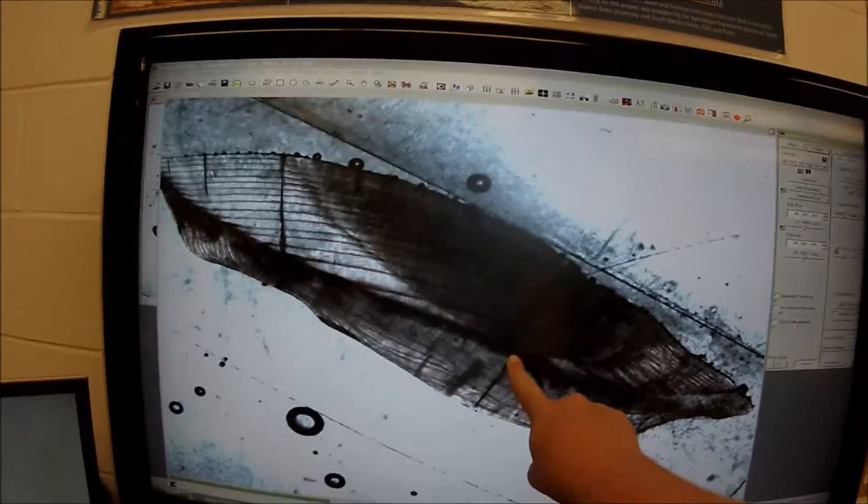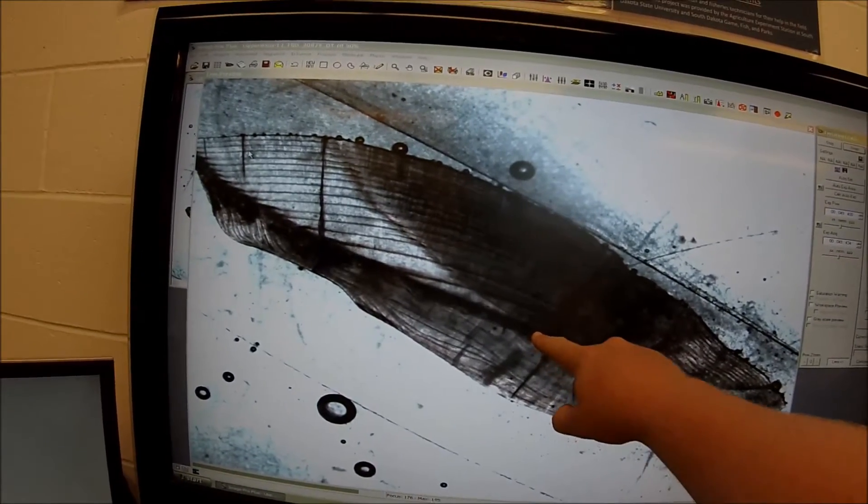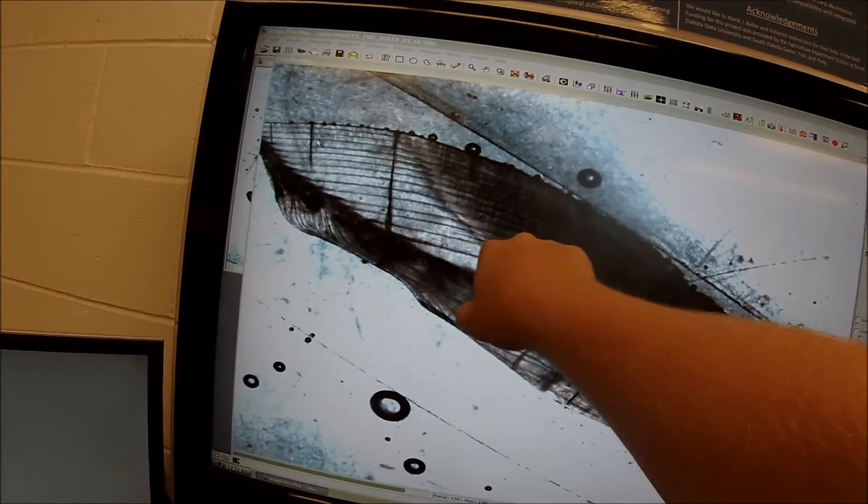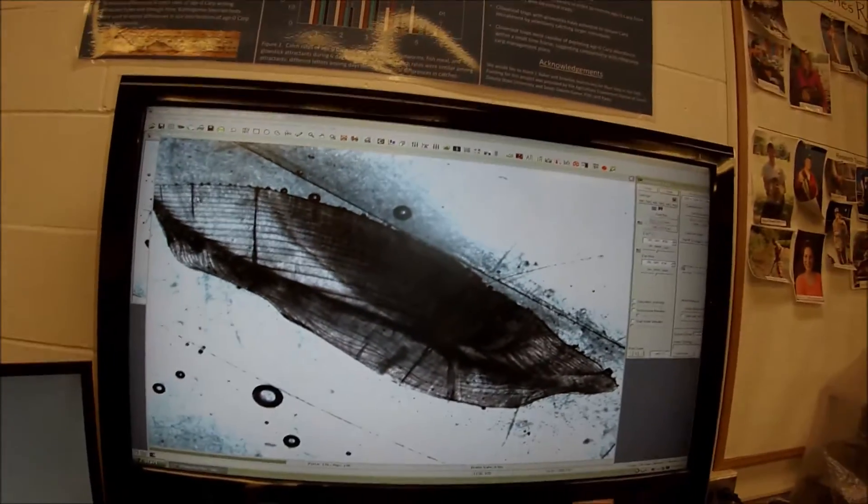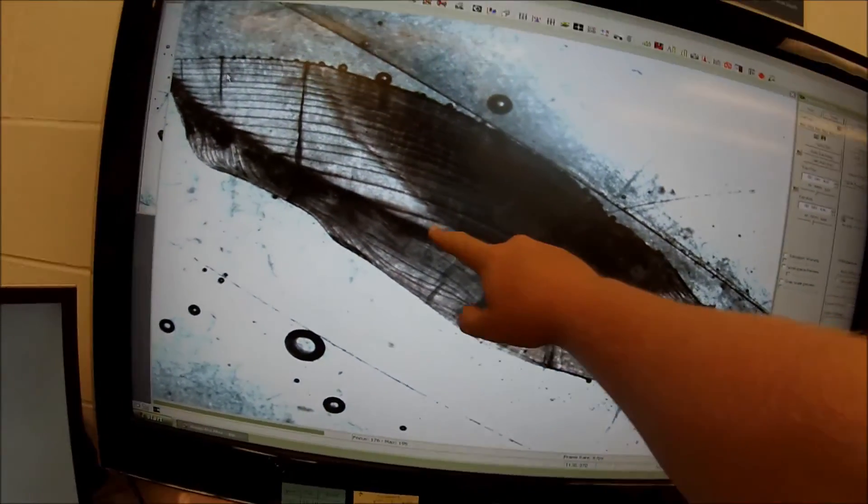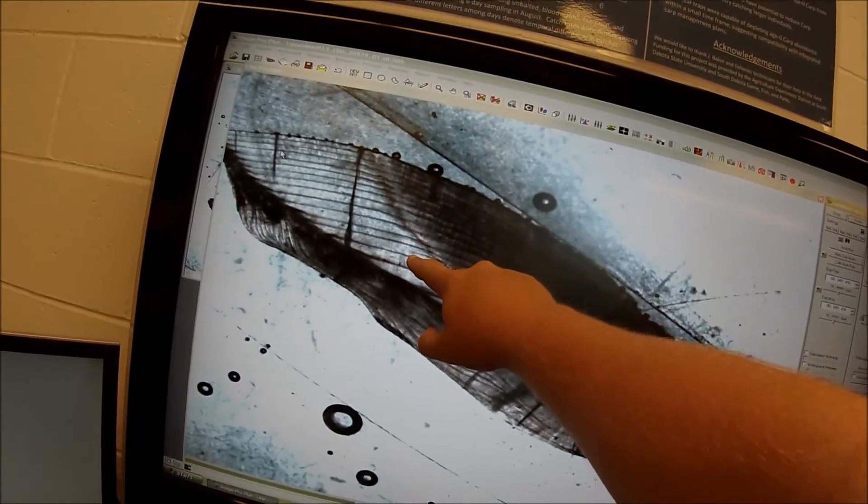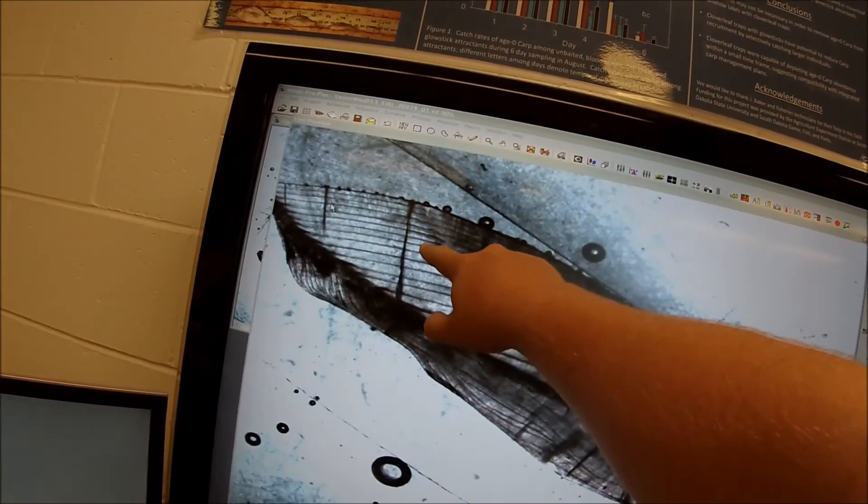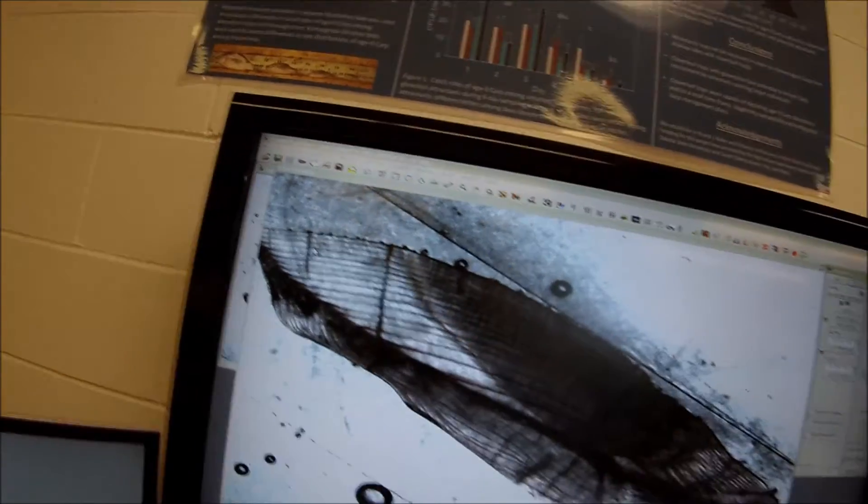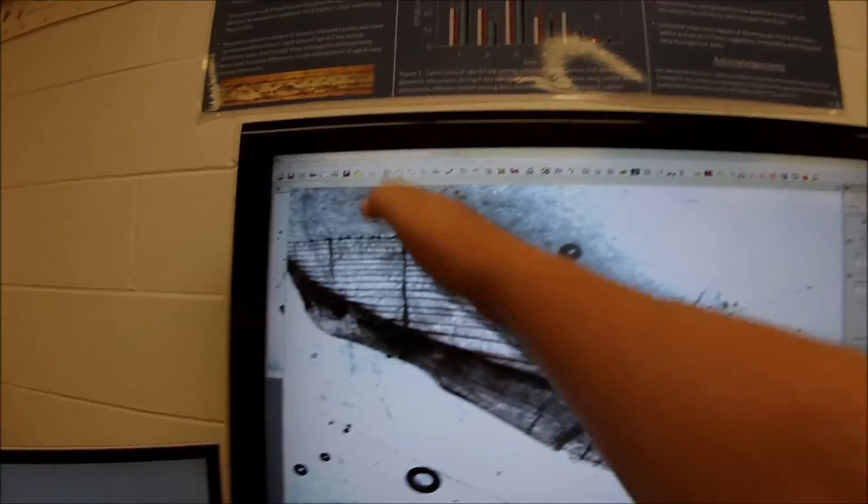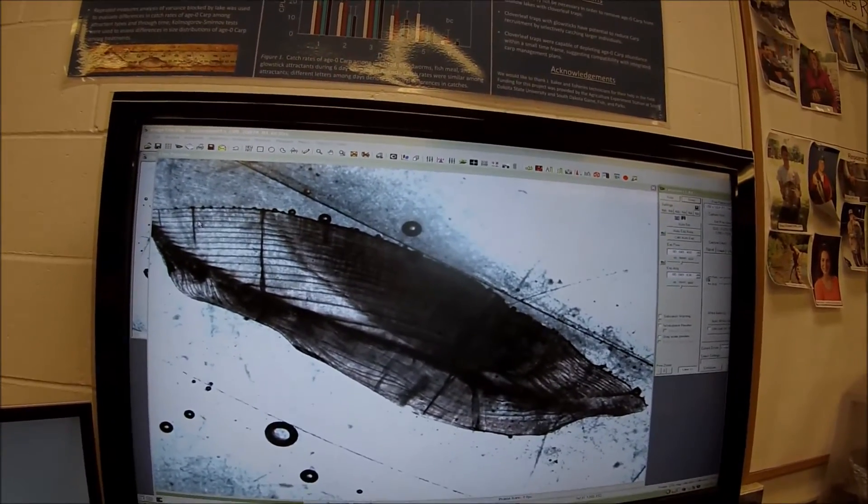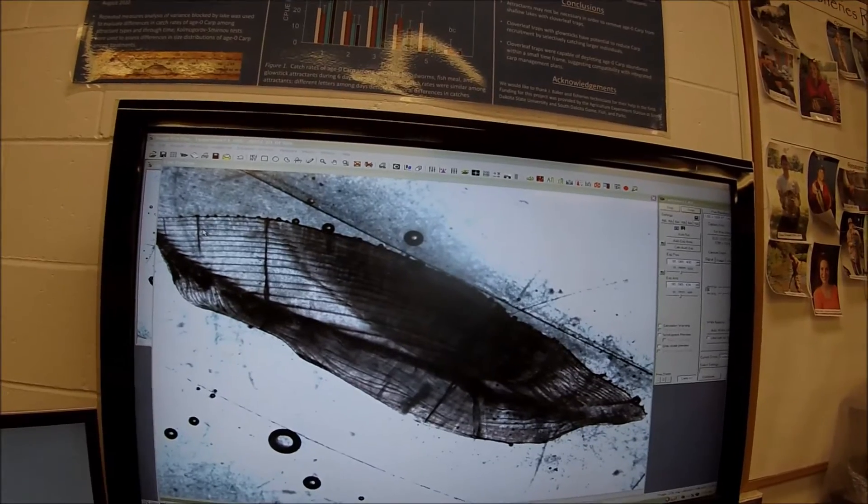This is the nucleus. This is what you call the center of the otolith. And then from here, you count the dark bands. Those are annuli, growth rings, just like a tree. So we have the nucleus. Then we've got 1, 2, 3, 4, 5, 6, 7, 8, 9, 10, 11, 12, 13, 14, 15, 16. Roughly 16 on that transect. That's an old, old freshwater drum. So pretty incredible.